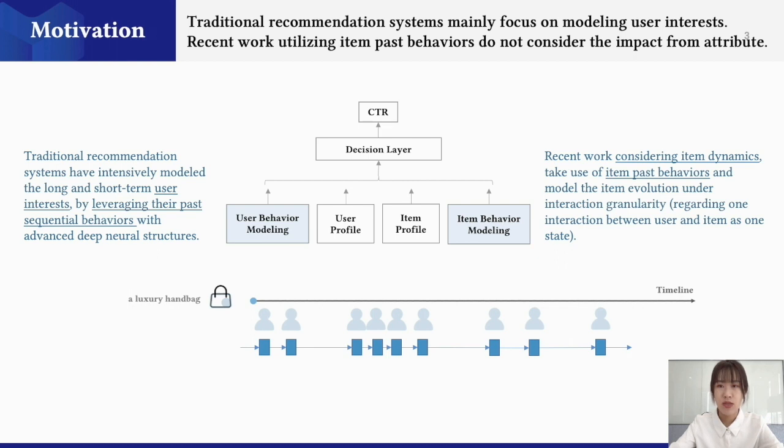Besides traditional methods with advanced deep neural structures on user behavior modeling, there have been a few works that consider the item dynamics. This work takes use of item past behaviors and models the item evolution in their interaction granularity, which is regarding one interaction between user and item as one state, and modeling the dynamics within these states. The perspective of these methods on modeling item evolution is somehow like a mirror of user behavior modeling. However, item dynamics is quite different from user interest change. Attributes like prices are inherent factors that affect the item popularity, and it can be seen by the systems.